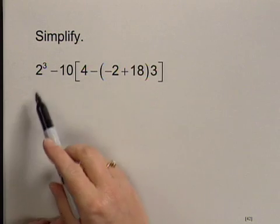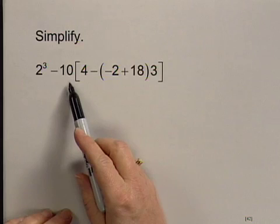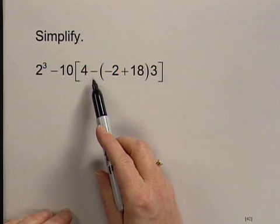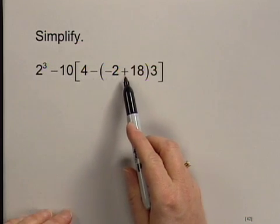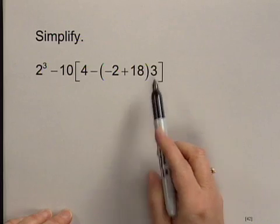We'll simplify the expression 2 to the third power minus 10 times the quantity 4 minus the quantity negative 2 plus 18 times 3.